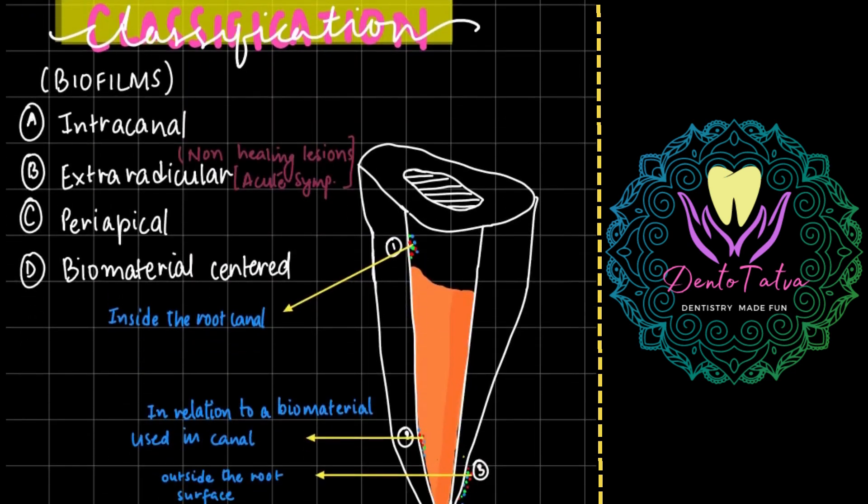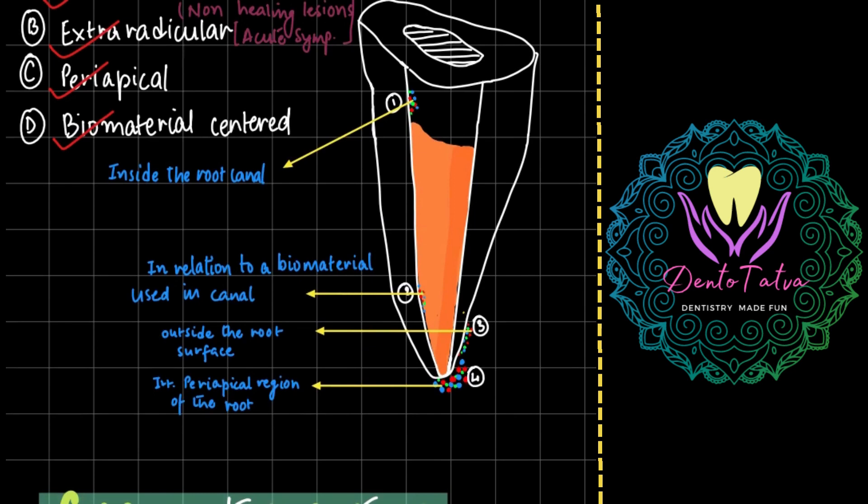If we have to classify, this is very important. Biofilms can be classified - these are the types of your specific endodontic biofilms: intracanal, extraradicular, periapical, biomaterial-centered. This is the diagram. The first one is the intracanal inside the root canal. The second one is in relation to the biomaterial, this is your gutta-percha and sealer, the interface between the two surfaces, the tooth surface and the biomaterial.